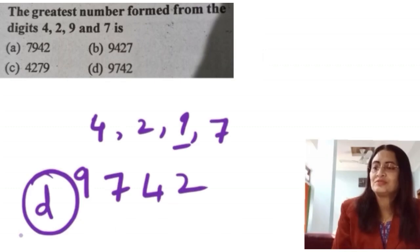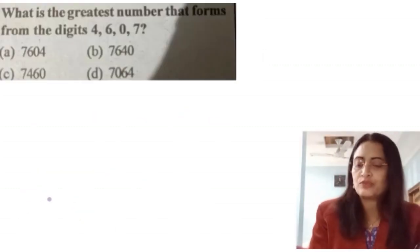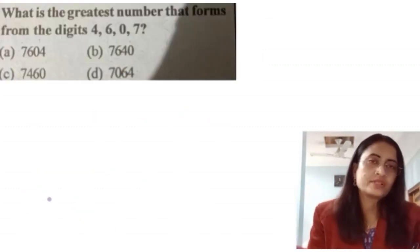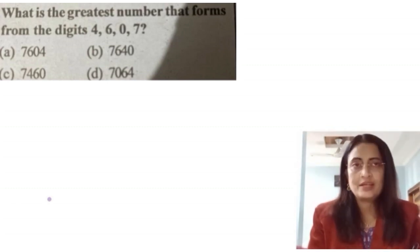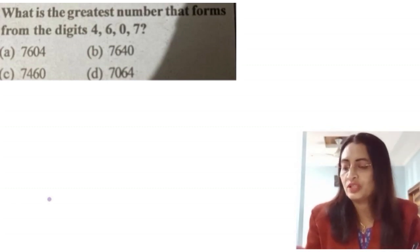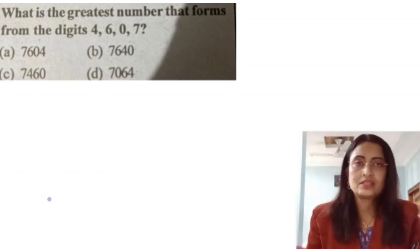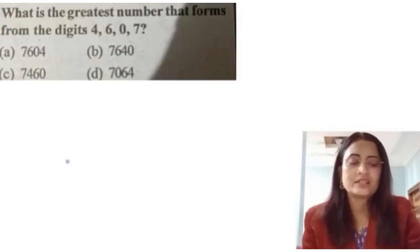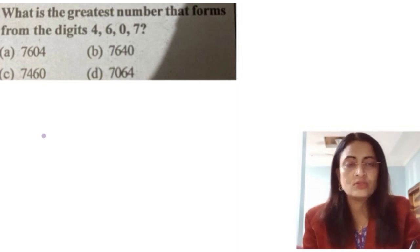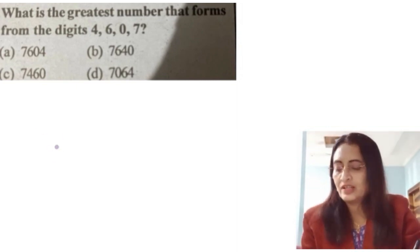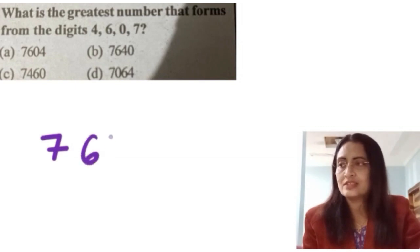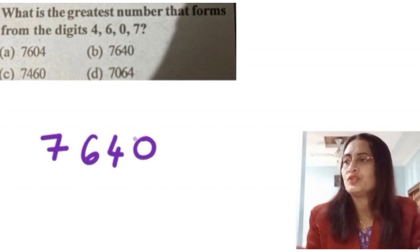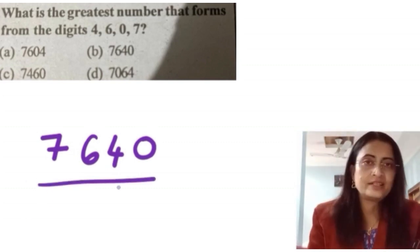Next question: what is the greatest number formed from the digits 4, 6, 0, and 7? Similar to previous sums. The greatest number: largest digit is 7, second largest is 6, third largest is 4, and last is 0. So the greatest number is 7640.